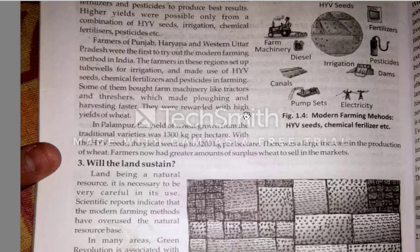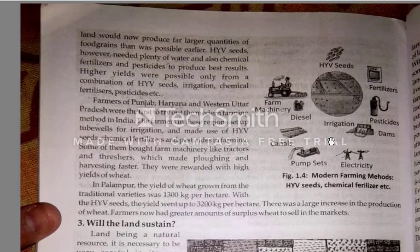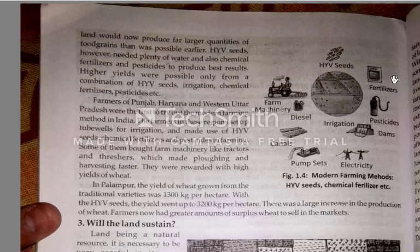This is called modern farming. What we need for modern farming: farm machinery like tractors and threshers, diesel fuel, HYV seeds, fertilizers, pesticides or insecticides, dams for water irrigation, electricity, pump sets or tube wells, and canals.